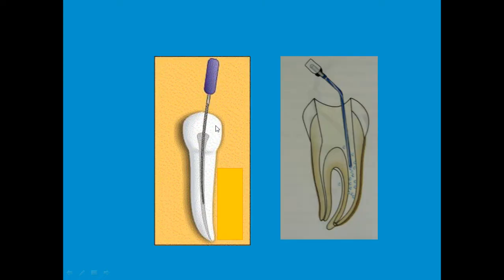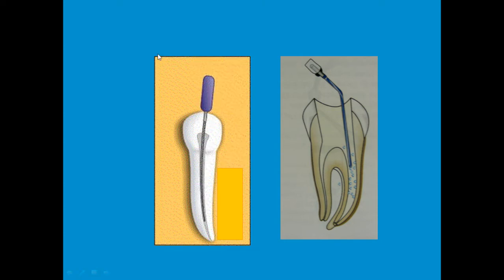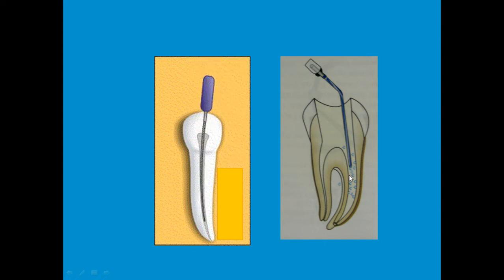The next step is the cleaning and shaping of the root canal. As we have seen, caries extends into the pulp and root canal, so we must remove all infection and dead pulp from inside. This is done with the help of files — mechanical shaping — and all the debris produced is removed with the help of irrigation. This is the second important step in root canal treatment.